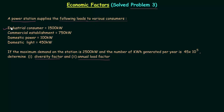The first consumer is an industrial consumer with 1500 kilowatt as the individual maximum demand. The second is a commercial establishment with 750 kilowatt. The third is domestic power with 100 kilowatt, and the fourth is domestic light with 450 kilowatt. These are the individual maximum demands.